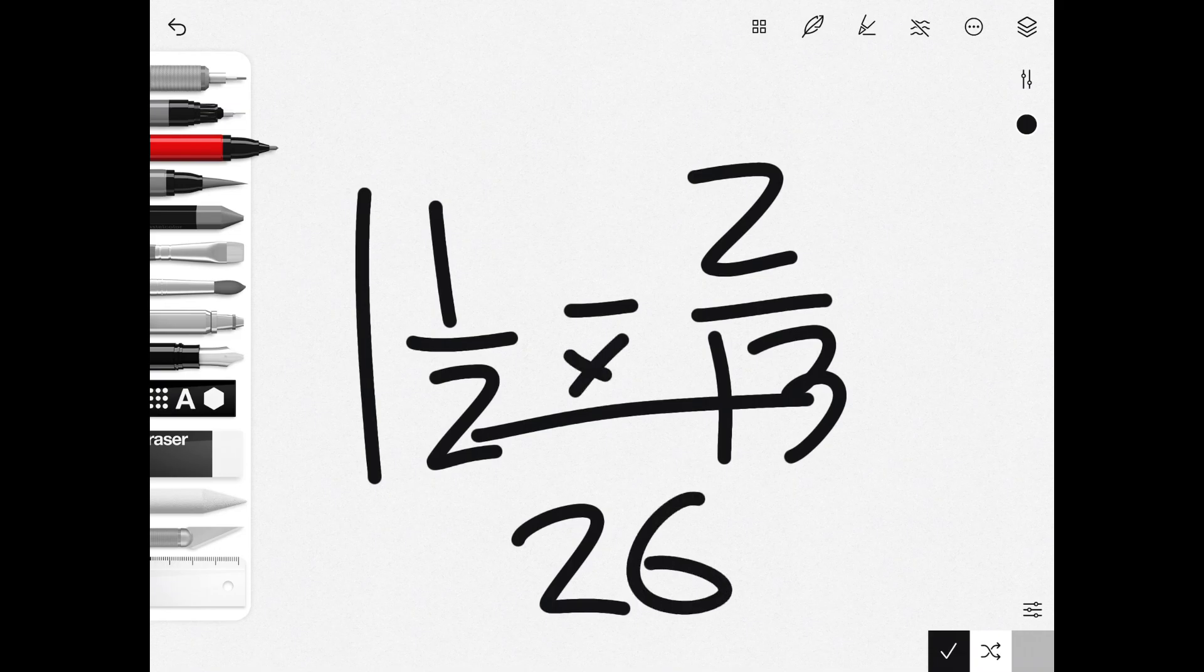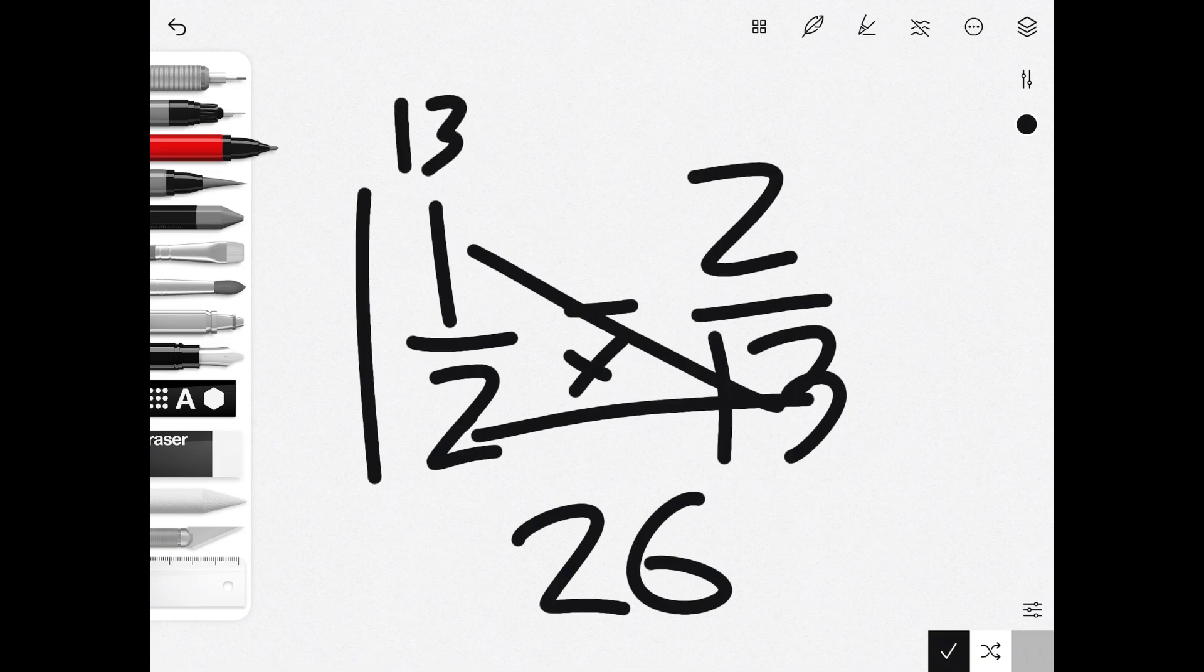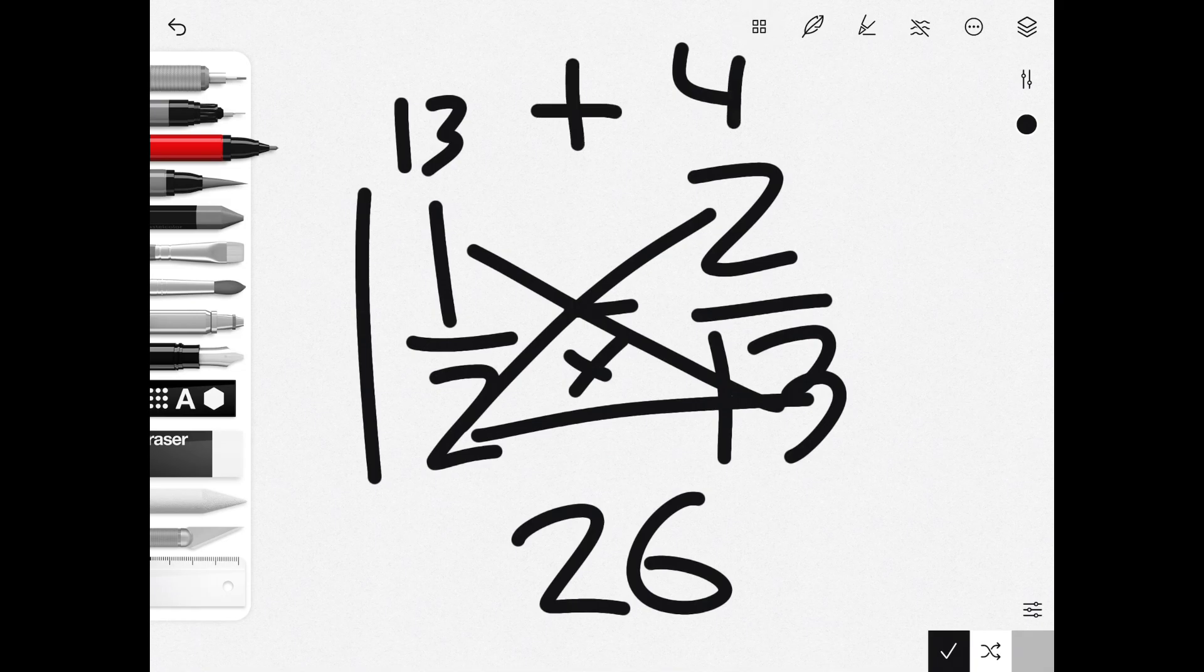So 13 times 1 is 13. 2 times 2 is 4. Don't add them—this is an example of what not to do. We don't want to do that. Since we're doing subtraction, we want to change that to subtraction.